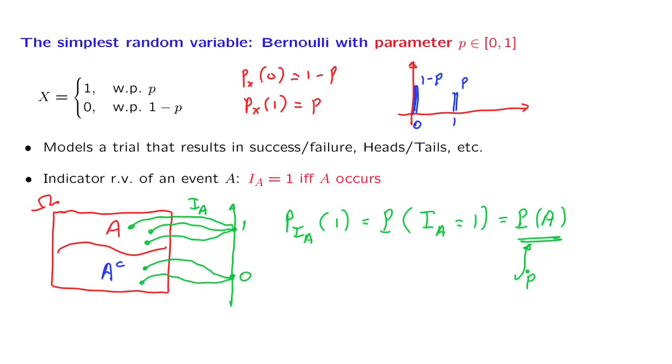Indicator random variables are very useful because they allow us to translate a manipulation of events to a manipulation of random variables, and sometimes the algebra of working with random variables is easier than working with events, as we will see in some later examples.